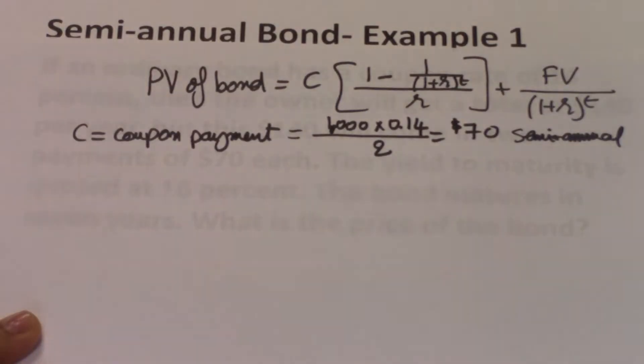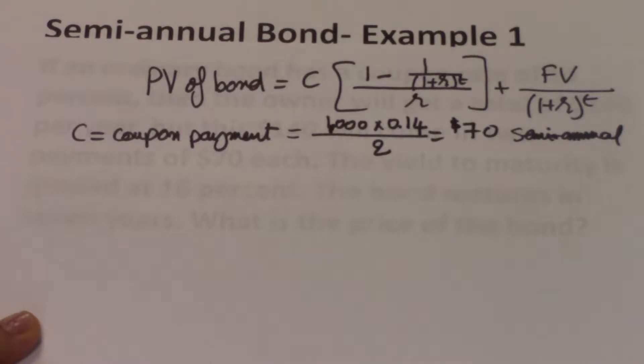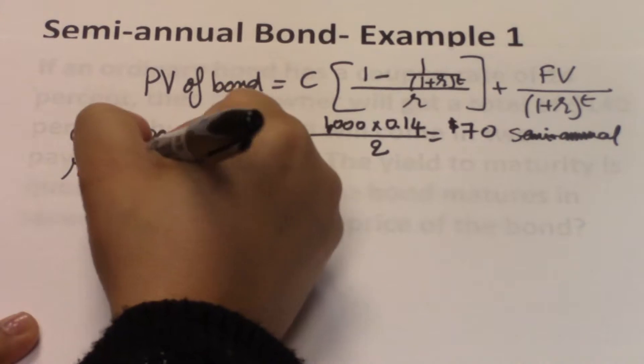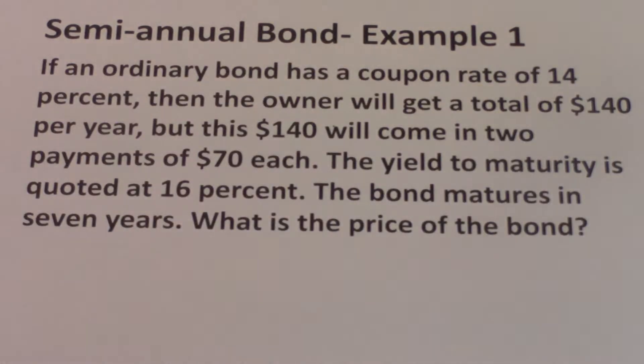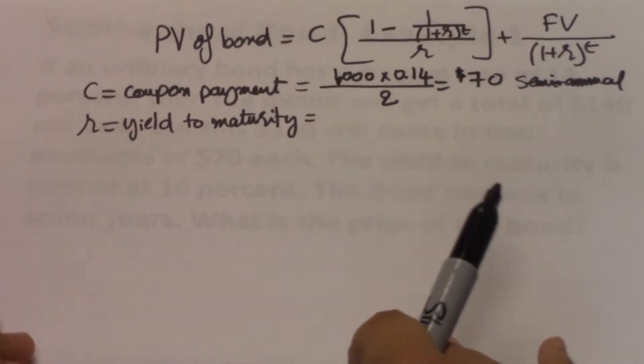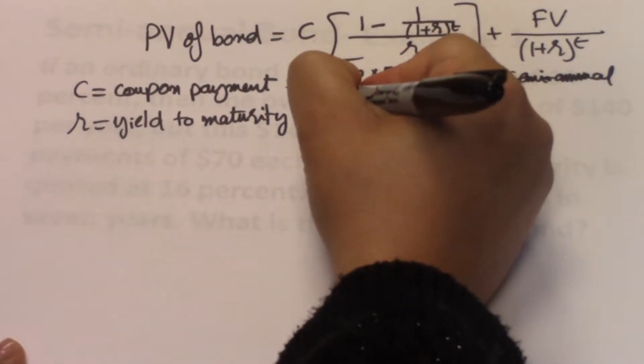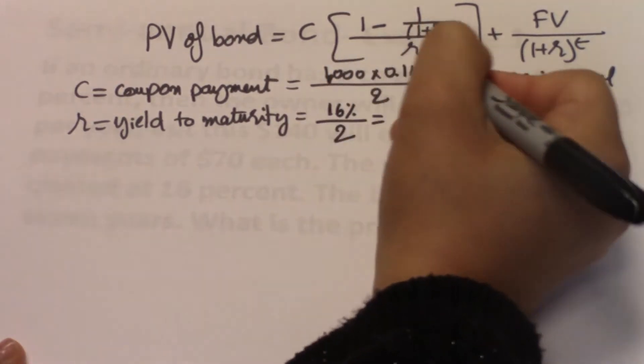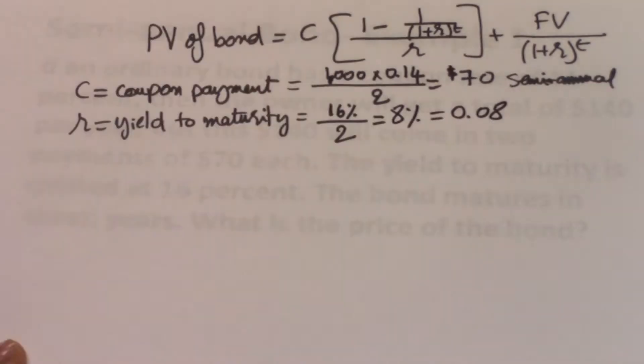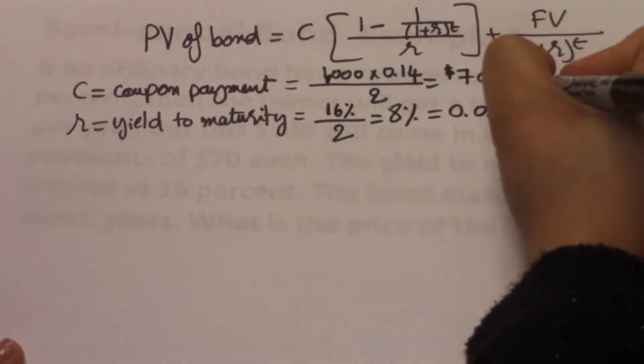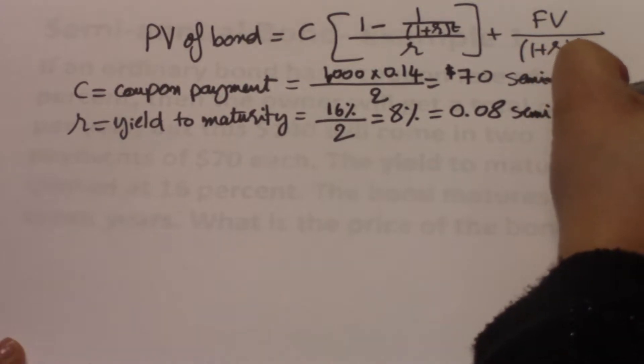So the r and the t that we input into the formula, they both have to be semi-annual numbers. The r is the yield to maturity. And the problem is telling us that the yield to maturity is quoted at 16%. You're not told anything about the frequency of the interest rate. If you're not told anything, then you always treat that number as an annual number. So in this case, the yield to maturity is 16%. So we take 16% and we also divide it by 2 because we want a semi-annual yield to maturity. This is 8%, but we input it as a decimal into the calculator. So it would be 0.08. And again, this is a semi-annual number.